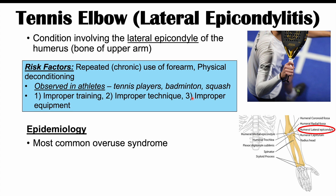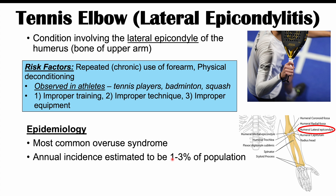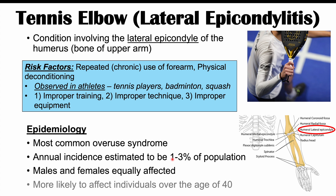Lateral epicondylitis is the most common overuse syndrome. It is estimated to have an annual incidence of 1–3% of the population, and males and females are equally affected. It is more likely to affect individuals over the age of 40, with onset most commonly occurring between the ages of 40 and 50.